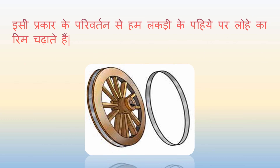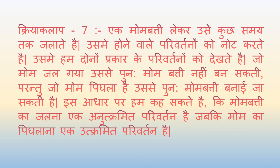इसी प्रकार एक और परिवर्तन से हम लकड़ी के पहिये पर लोहे का रिंग चढ़ाते हैं। क्रिया-कलाप सात: एक मोमबत्ती लेकर उसे कुछ समय तक जलाते हैं और उसमें होने वाले परिवर्तनों को नोट करते जाते हैं।